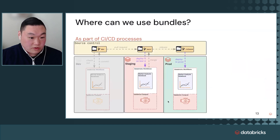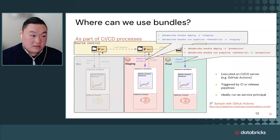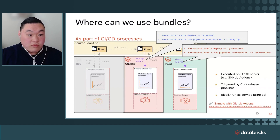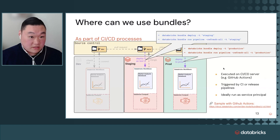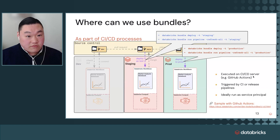How can this deploy to multiple workspaces? You can use it as part of a CICD process. Maybe you have a dev branch which automatically coincides with your dev workspace. From a pull request, you validate first upon creation. If that validation passes from a Databricks bundle validate, you deploy when you merge the pull request and go to your main branch — which correlates with your staging workspace using databricks bundle deploy --target staging. When you want to go to your release branch, you deploy to production. This is all executed on CICD servers — in this case GitHub Actions — and ideally you run as a service principal using a service principal secret for M2M authentication rather than a personal access token.